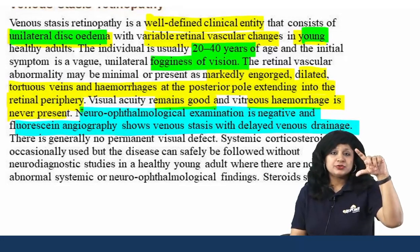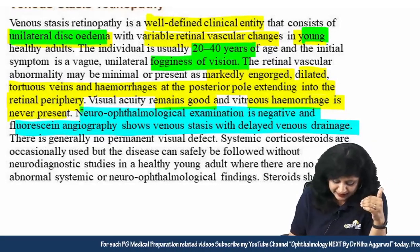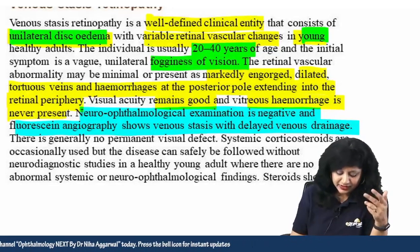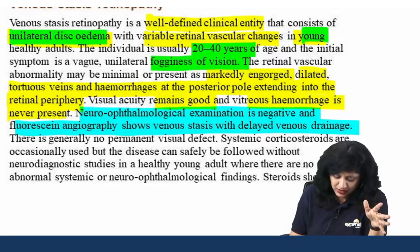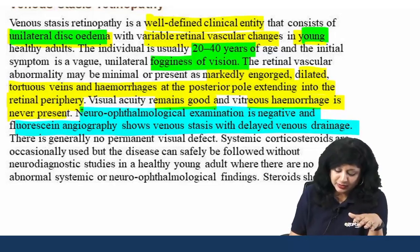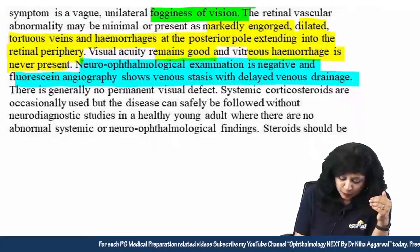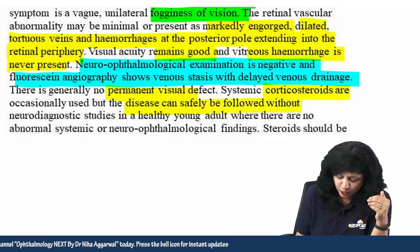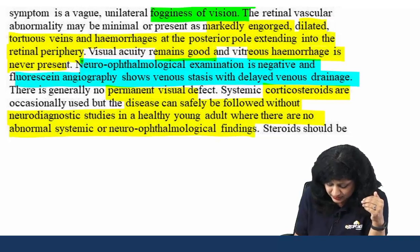A typical clinical scenario: a male patient, 35 years old, presenting with unilateral fogginess. On fundus examination: marked engorgement, dilatation of tortuous veins, retinal hemorrhages, good visual acuity, no vitreous hemorrhage. Neuro-ophthalmological examination is negative; fluorescein angiography shows venous stasis with delayed venous drainage. There is generally no permanent visual defect, and the disease can be safely followed without neuro-diagnostic study in a healthy adult with no abnormal systemic or neuro-ophthalmological findings.